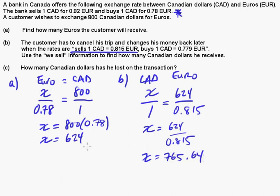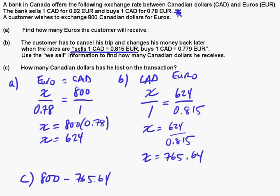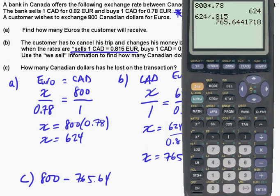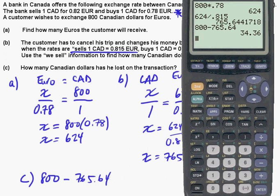He started with 800 Canadian dollars and now he has 765. The difference is the bank commission — that's how the bank makes money when they change currency. Part C asks how much he lost in the transaction. So 800 minus 765.64 equals 34.36 Canadian dollars.